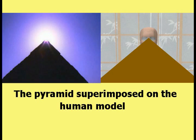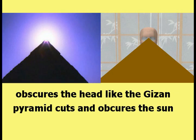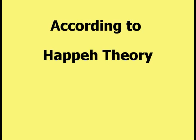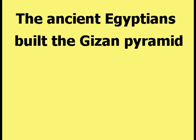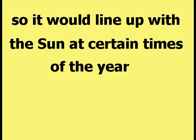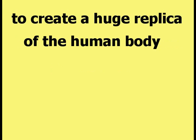Here is a comparison picture between the Giza pyramid with the sun behind it and the human model with a pyramid superimposed on it. The pyramid superimposed on the human model obscures the head like the Giza pyramid cuts and obscures the sun. According to Happy Theory, this was the goal of the Egyptians in building the Giza pyramids in the exact location they are built. The ancient Egyptians built the Giza pyramid so it would line up with the sun at certain times of the year to create a huge replica of the human body.